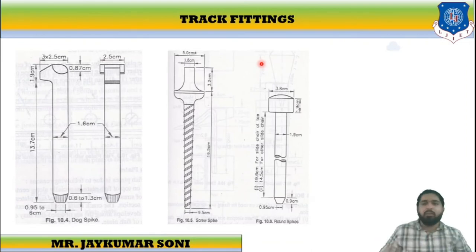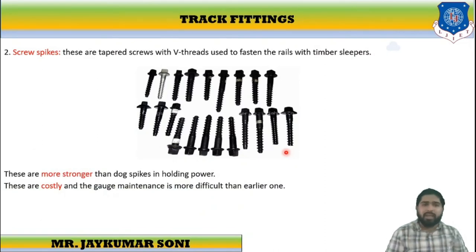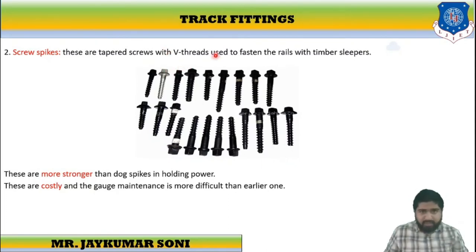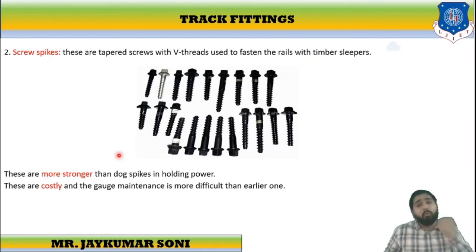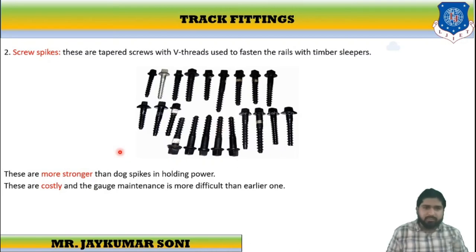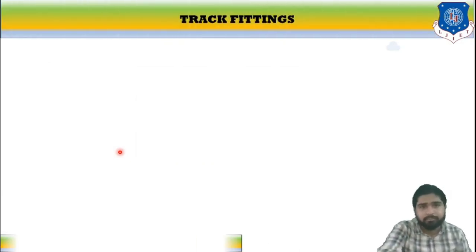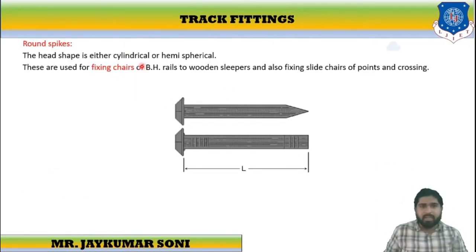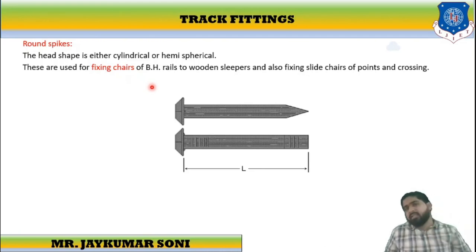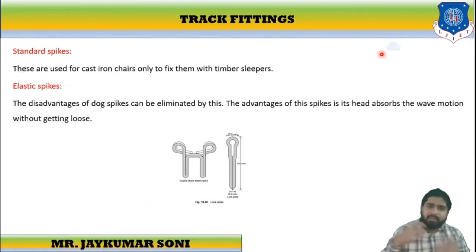Types of spikes include dog spikes, screw spikes, and round spikes. Screw spikes, as the name suggests, are tapered screws that are V-threaded. They are used to fasten the rail with the timber sleeper. They are stronger than dog spikes, but they are costly and gauge maintenance is more difficult. Round spikes have a cylindrical or hemispherical head shape. They are used to fix the chair to the wooden sleeper and also for fixing slides at points and crossings. Standard spikes are used to hold the cast iron chair and fix it with the timber sleeper.